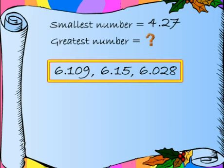Look at these 3 numbers. They have the same whole part, that is 6. So how do we find the greatest number among these 3? In fact, we have a rule for this. So let me explain you the rule step by step.